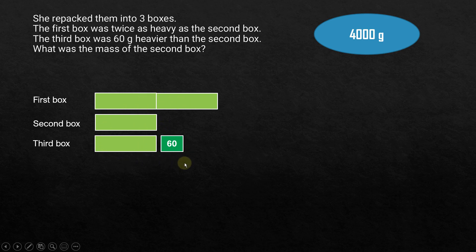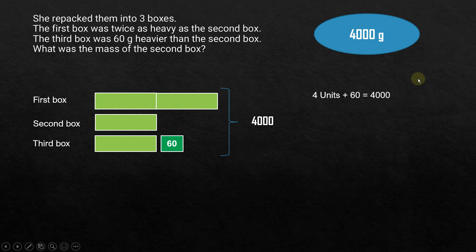This diagram represents the total mass of the biscuits in the three boxes. We have an unknown unit quantity — one, two, three, four such units — plus a known quantity of 60 grams. This whole thing together equals 4000 grams, so: four units plus 60 equals 4000.